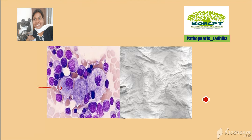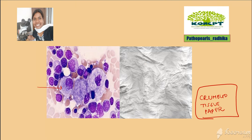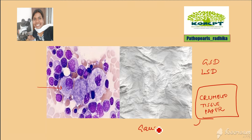A child with pancytopenia and massive splenomegaly — remember, any child with massive splenomegaly, you have to rule out a storage disorder, either a glycogen storage disorder or a lysosomal storage disorder. The crumpled tissue paper appearance of the macrophages is seen in Gaucher's disease.